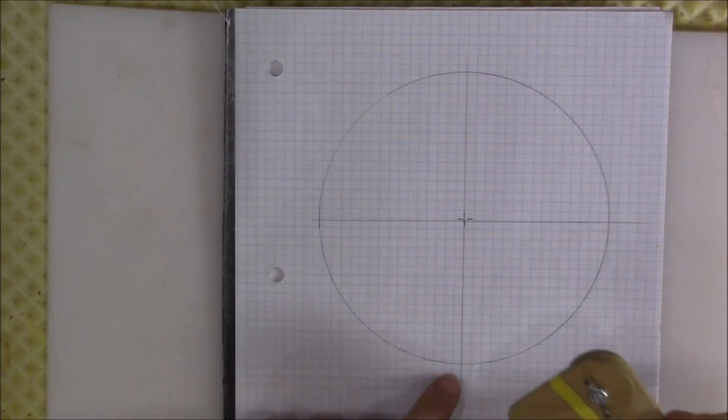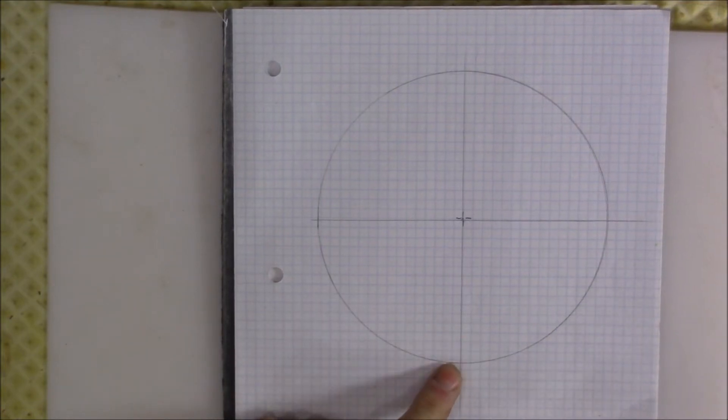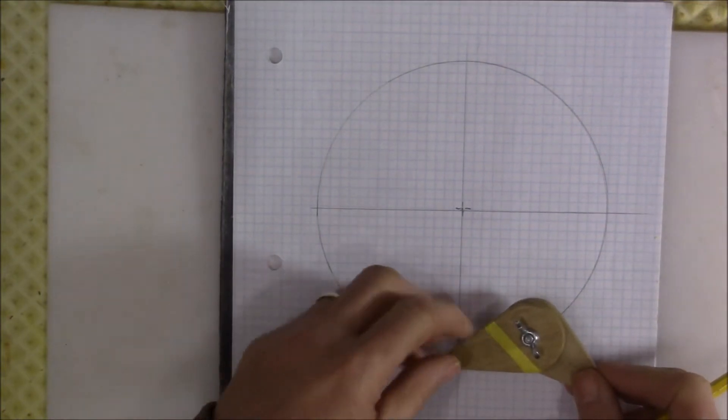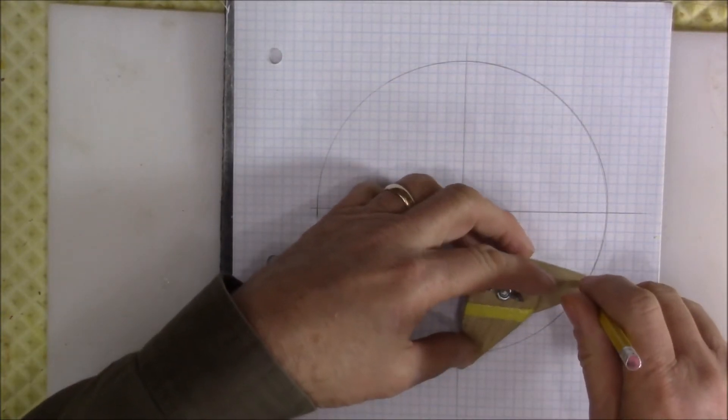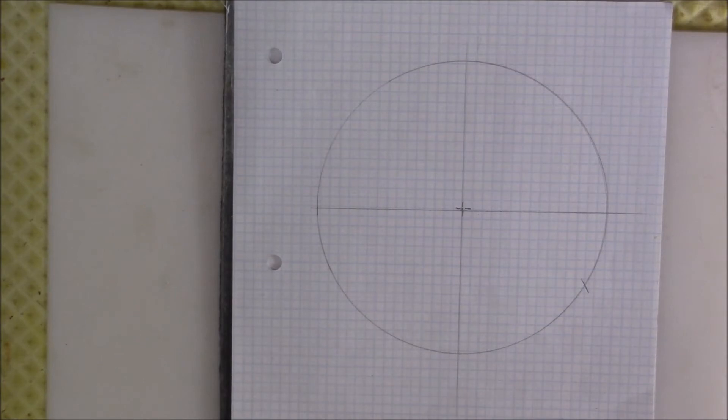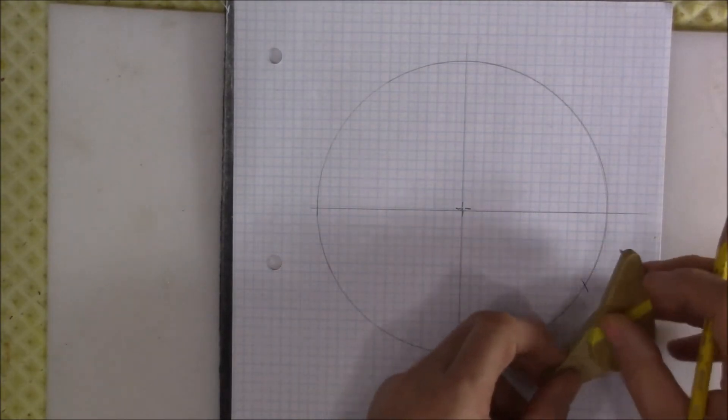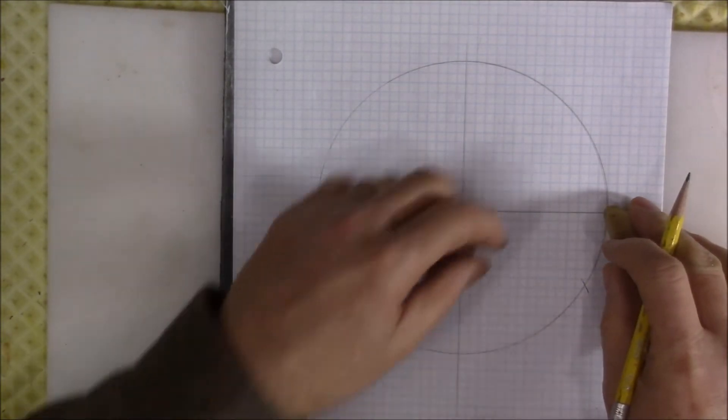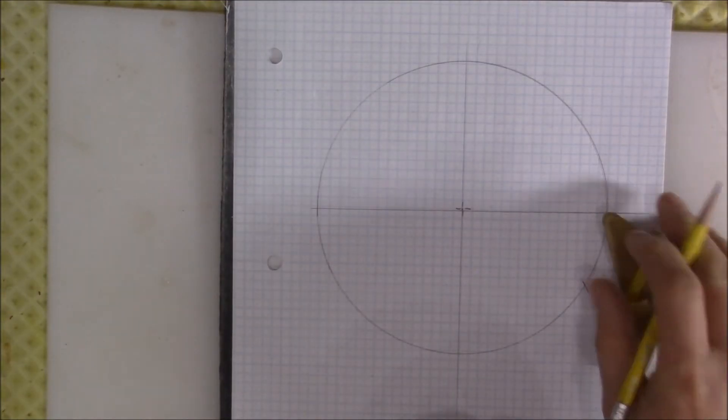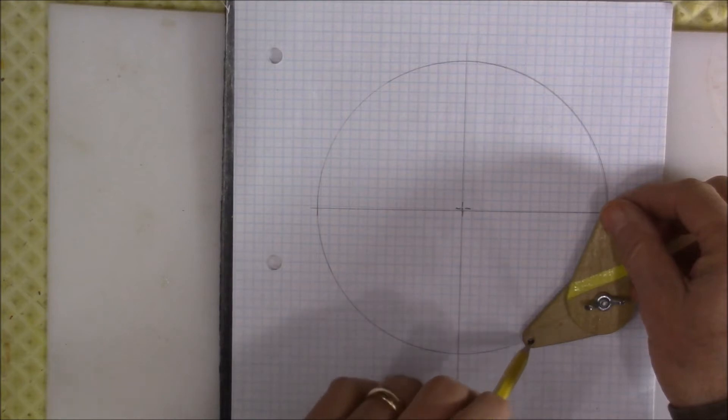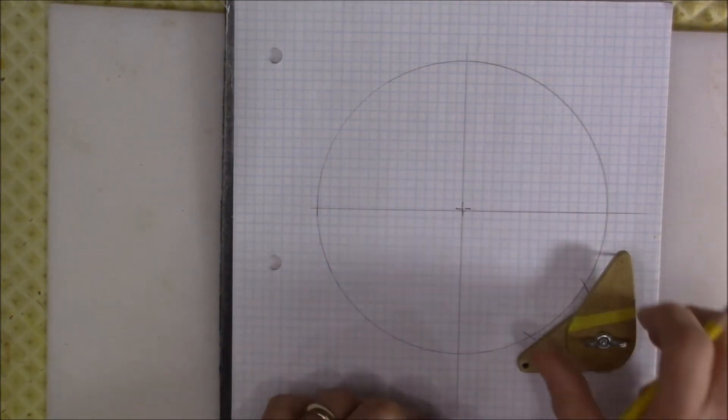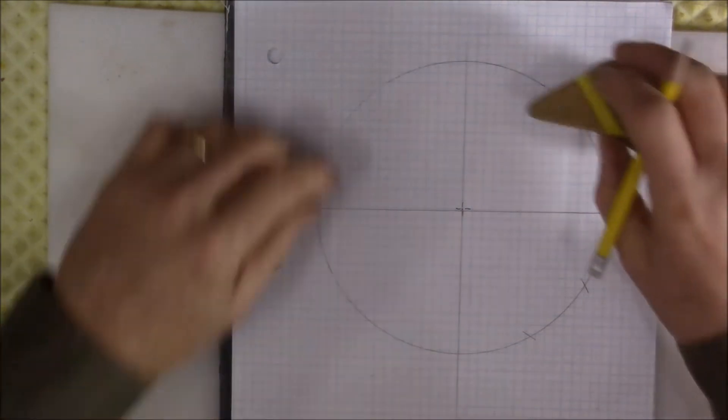Once you've found your radius, you come from this point and strike an arc, and then come over here to this point. Strike that arc, and then up to the top. Strike that arc.